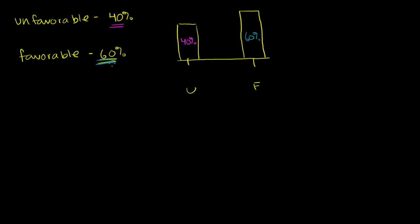If I were to ask you to pick a random member of that population and say what is the expected favorability rating of that member, or another way to think about it is, what is the mean of this distribution? For a discrete distribution like this, your mean or expected value is just the probability-weighted sum of the different values the distribution can take on. The way I've written it, you can't take a probability-weighted sum of u and f — you can't say 40% times u plus 60% times f and get a number. So we're going to define u and f to be some numeric value.